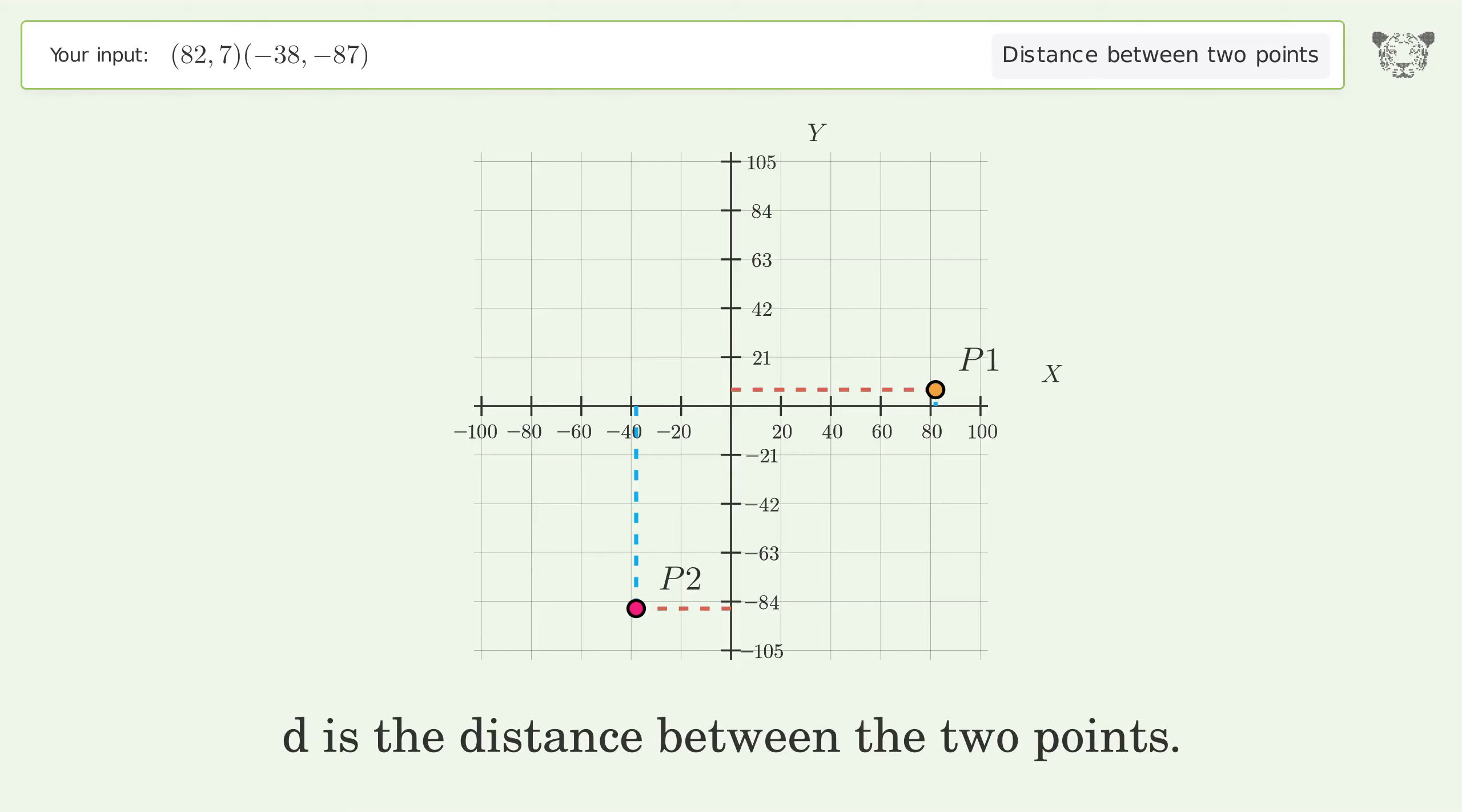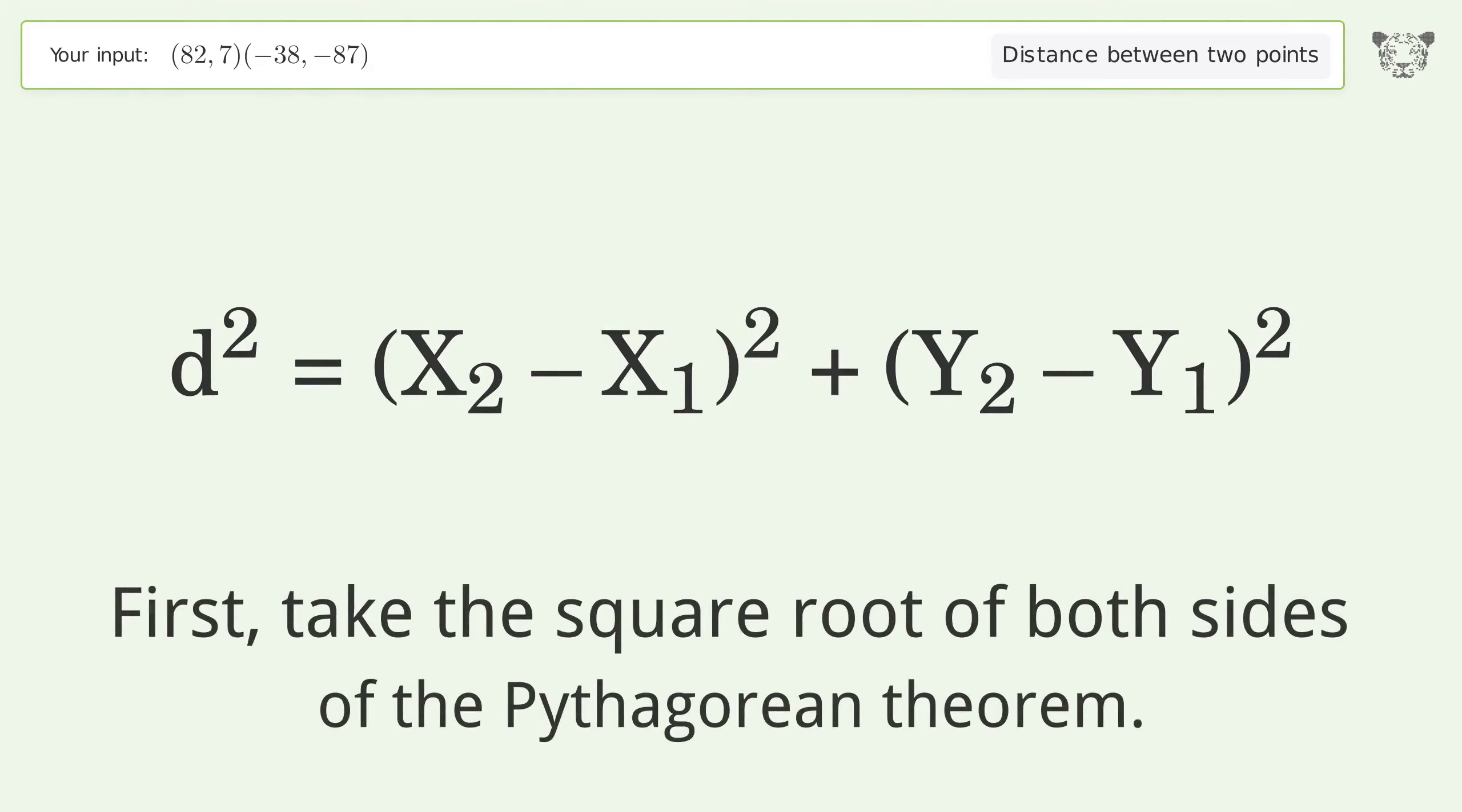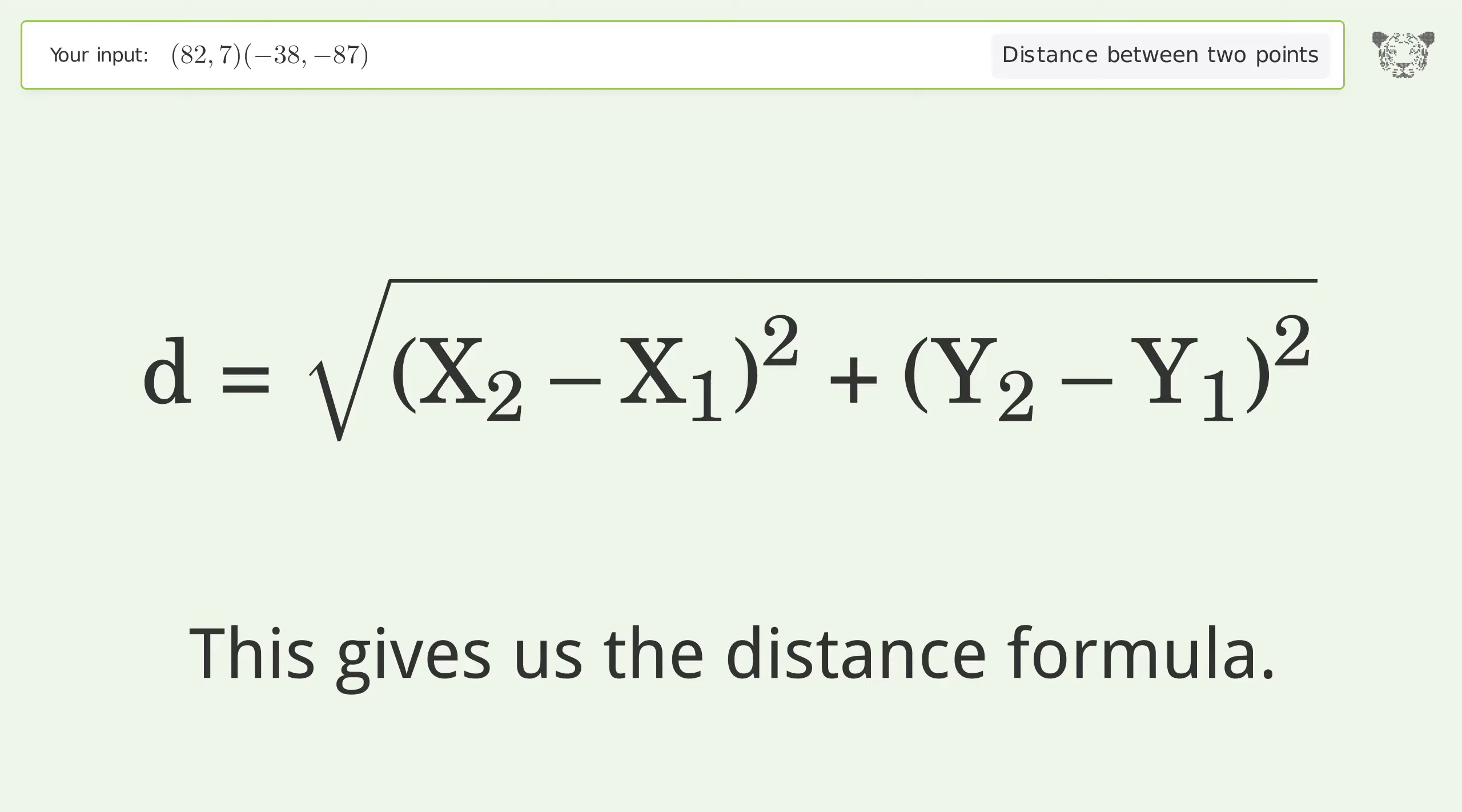d is the distance between the two points. First take the square root of both sides of the Pythagorean theorem. This gives us the distance formula. Plug the coordinates of the points into the formula.